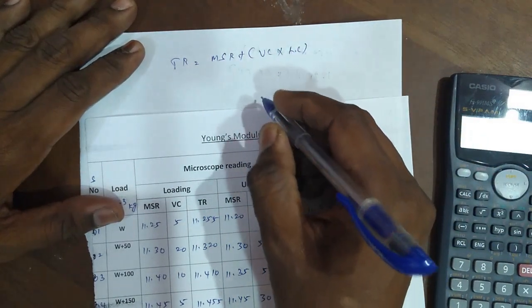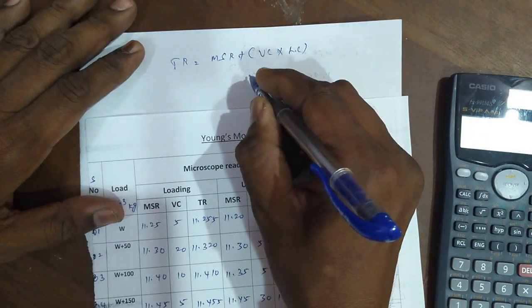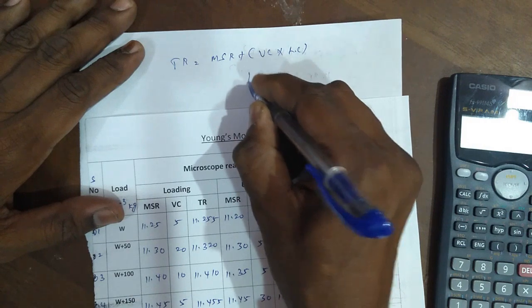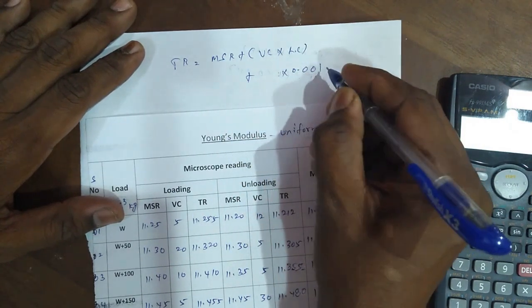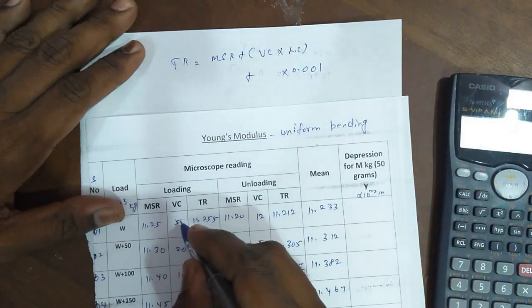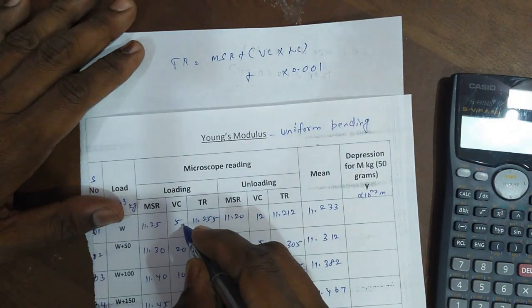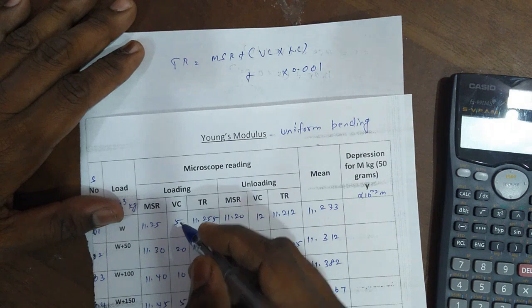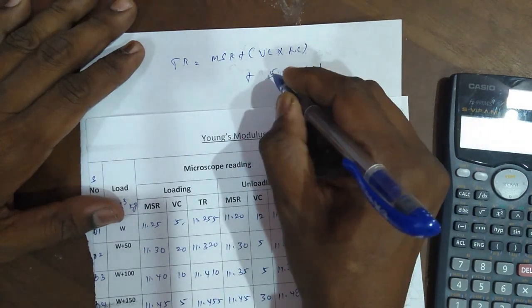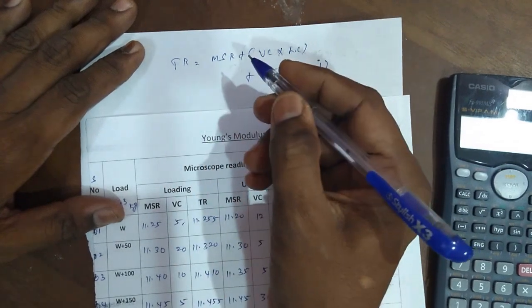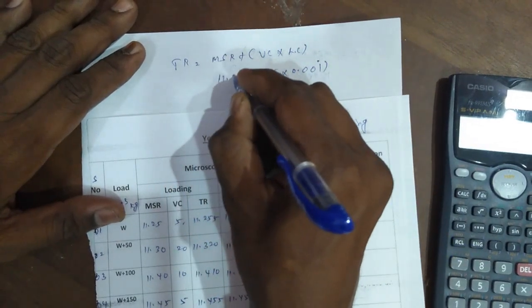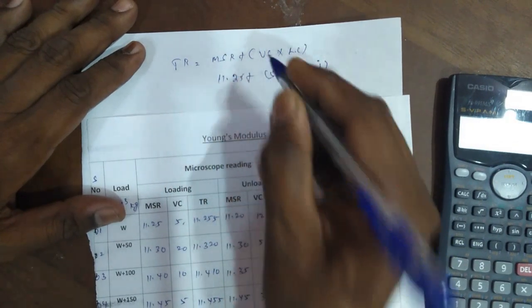The traveling microscope least count is 0.001 centimeters. For example, the first calculation, this value is 5 divisions and MSR value is 11.25. For example, the first reading is 25.